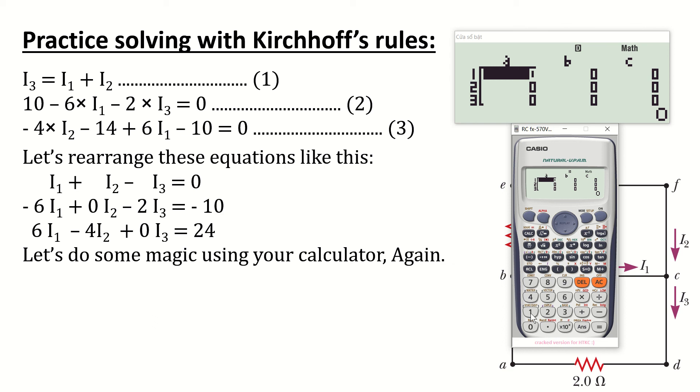For the first one, press 1 equal, then 1 equal, then negative 1 equal, and for the constant 0 equal. Move on to the second equation, at which we will type negative 6 equal, 0 equal, negative 2 equal, and finally negative 10 equal.